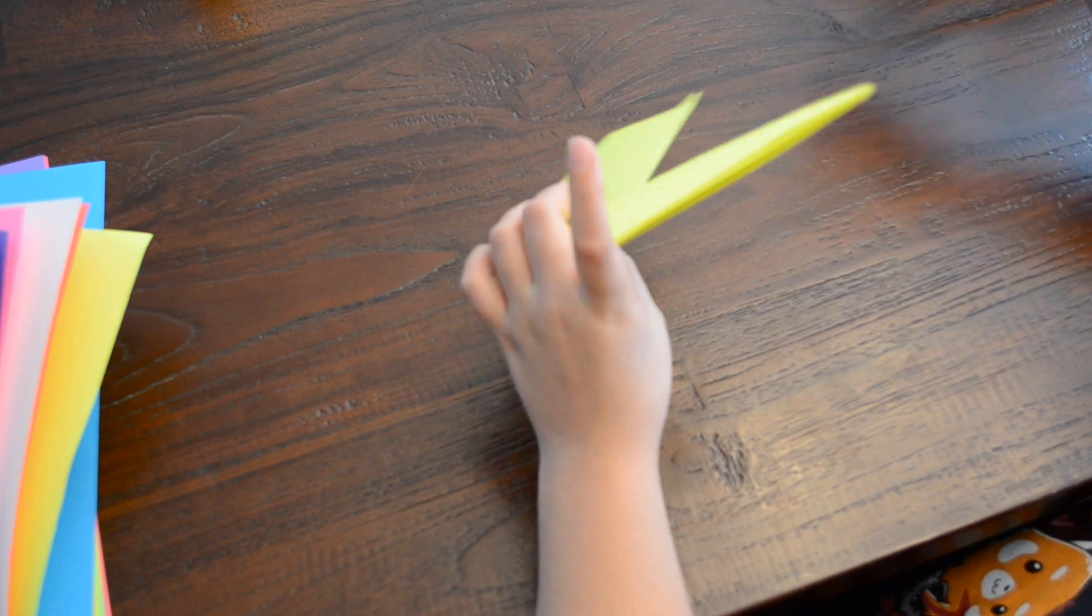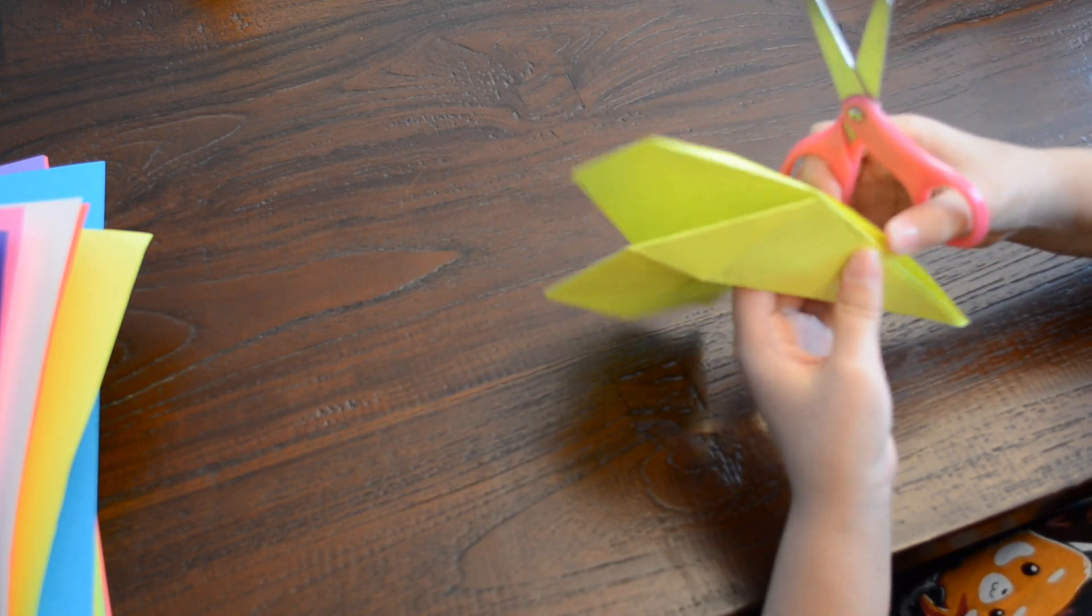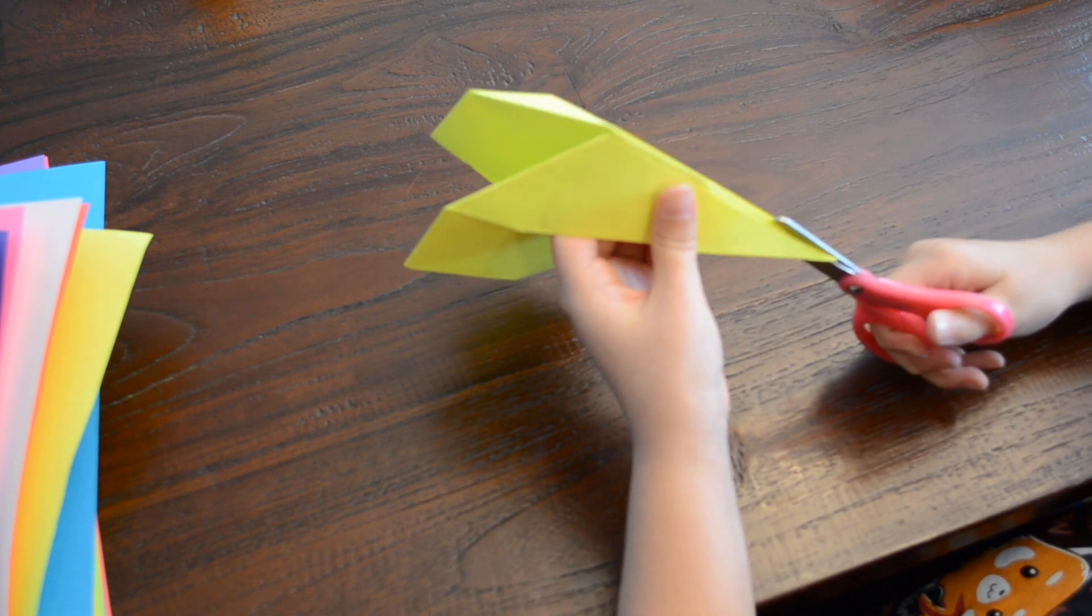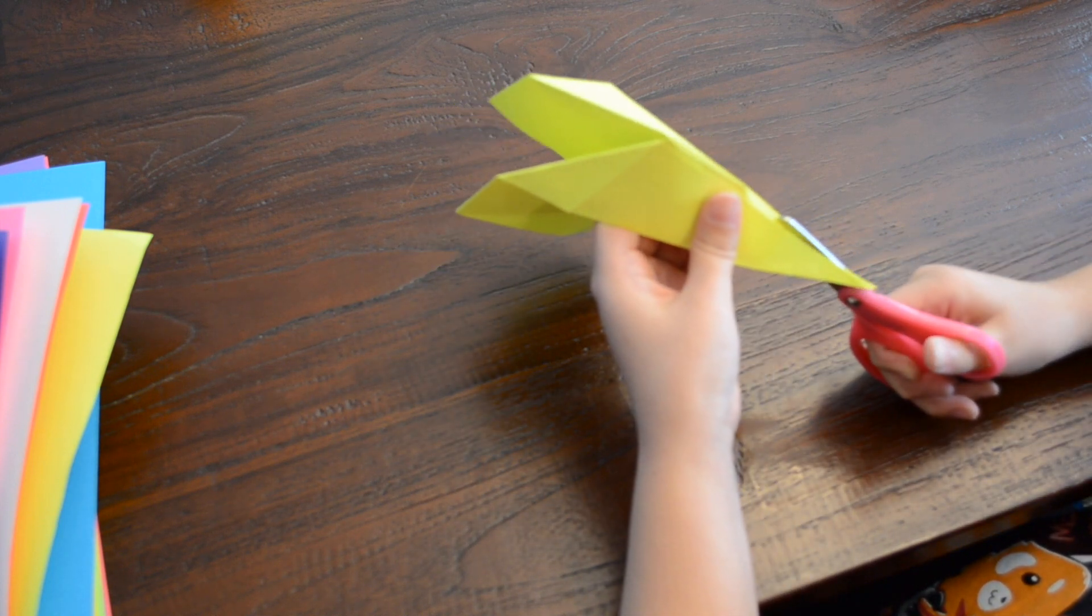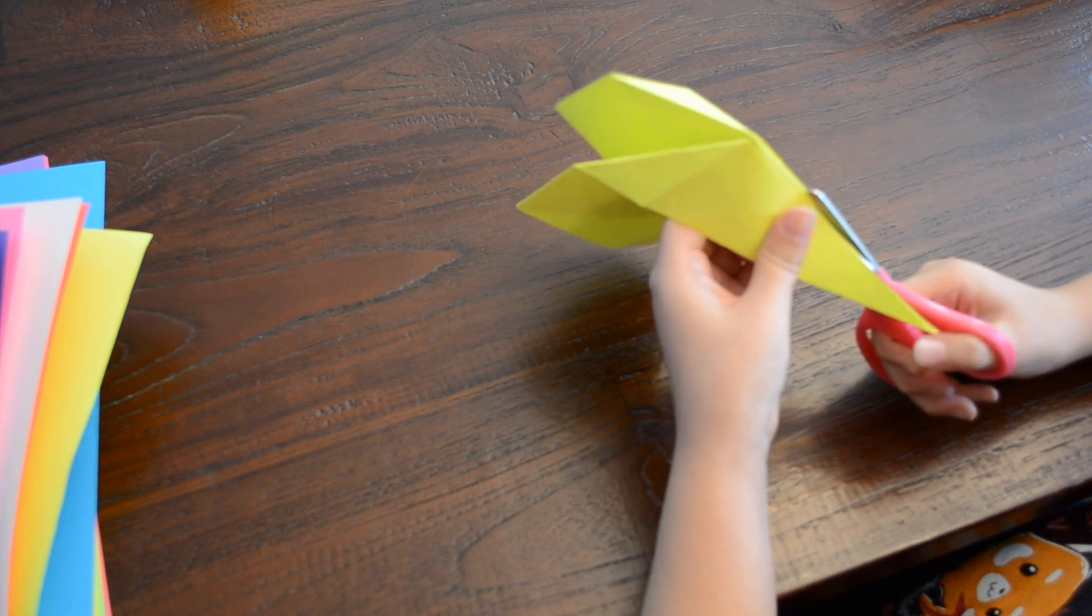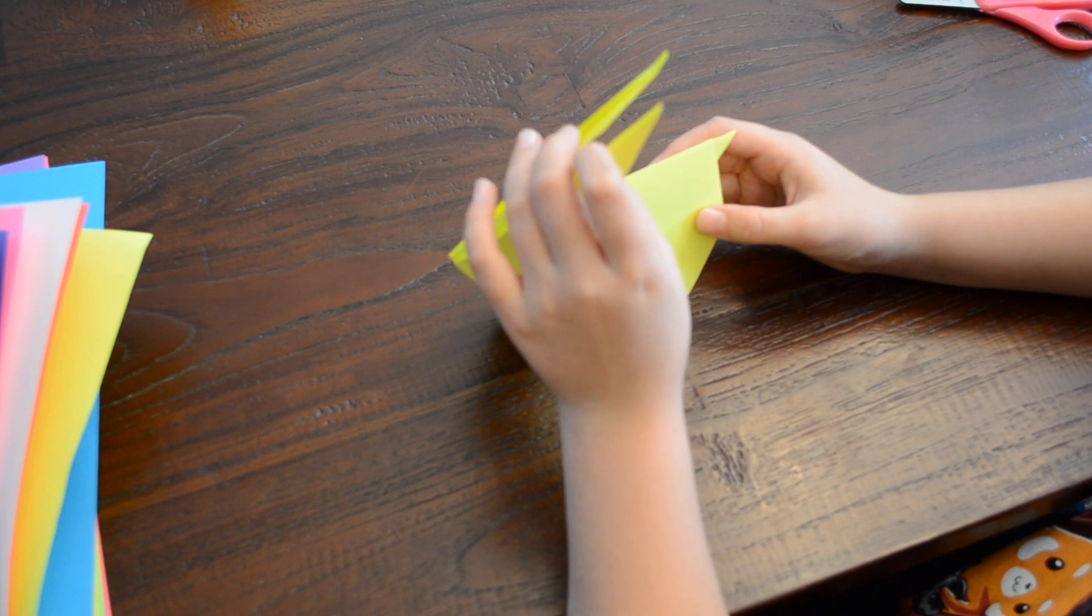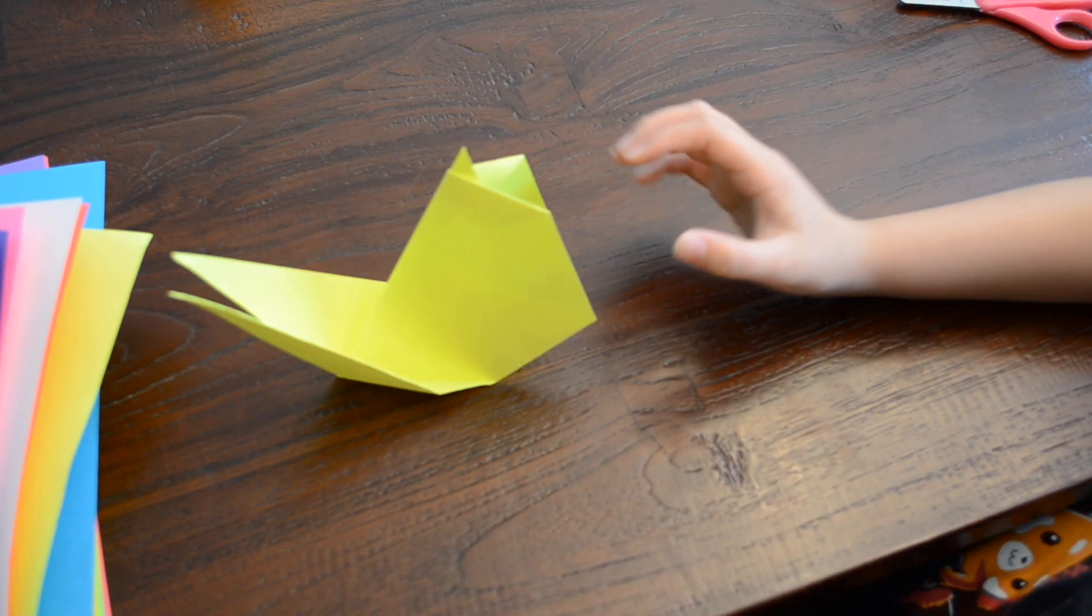And then, you should probably get a parent for this, but down the middle of the ears, you can take your scissors and cut it. Well, you're supposed to. Take your scissors and cut it down the middle so they're actually like separate ears.